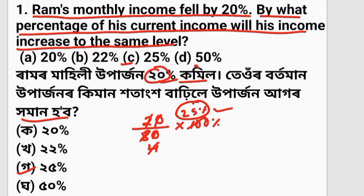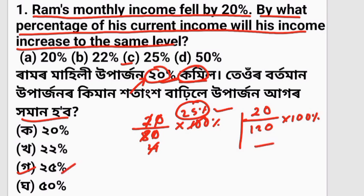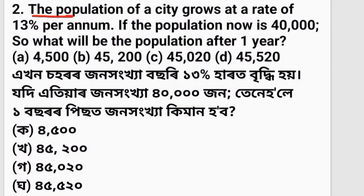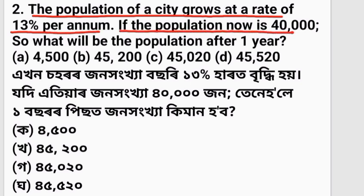Next problem: the population of a city grows at a rate of 13% per annum. If the population now is 40,000, what will be the population after one year?